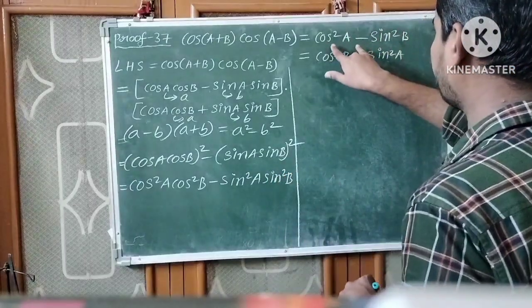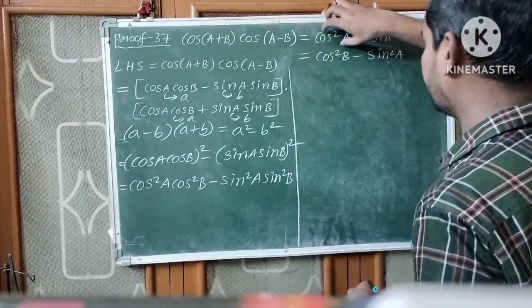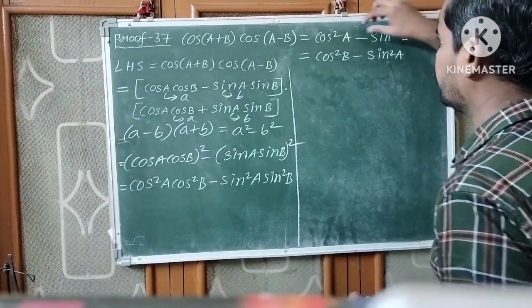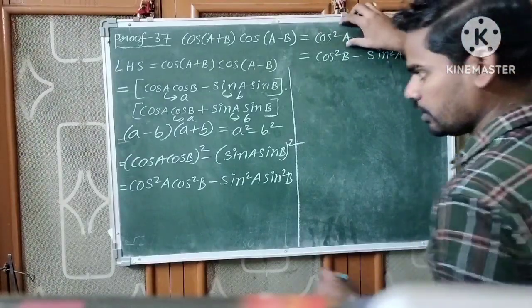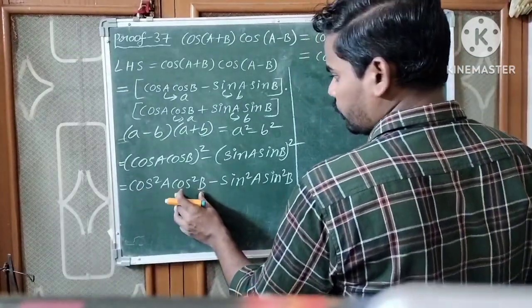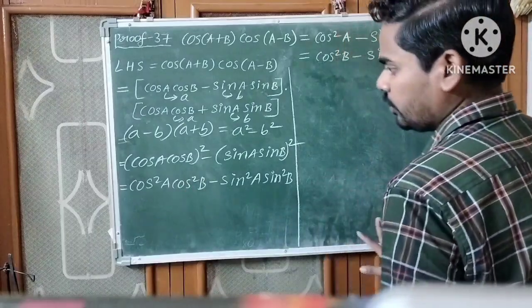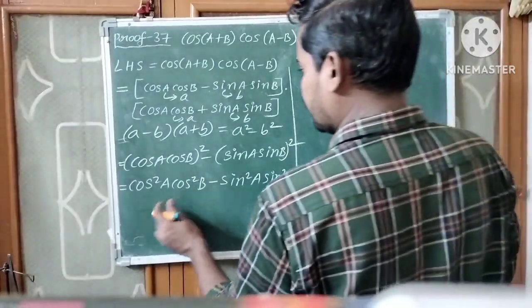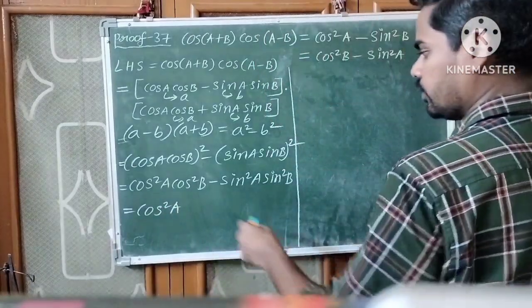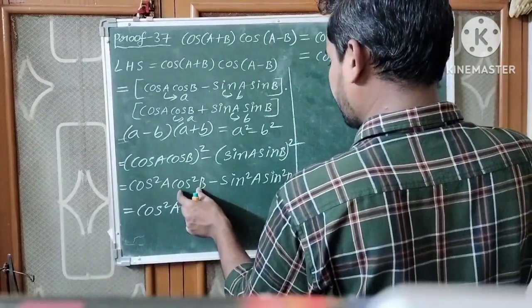Now observe the RHS: cos²A minus sin²B. One term is a cosine function and one is a sine function. Here the angle is A and here the angle is B. We already have cos²A, so we need to eliminate cos²B from our expression.